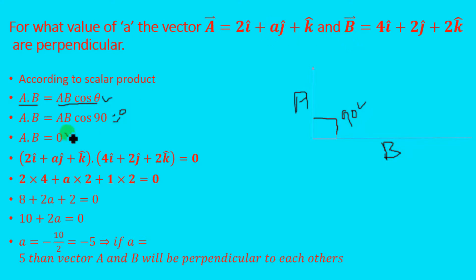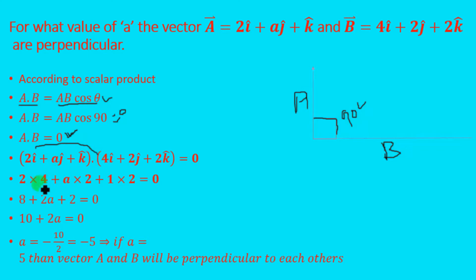Vector a is 2i + aj + k and vector b is 4i + 2j + 2k, where i, j, and k are the unit vectors. Taking the dot product, we get: 2 × 4 = 8, a × 2 = 2a, and 1 × 2 = 2. So we have 8 + 2a + 2 = 0, which simplifies to 10 + 2a = 0.